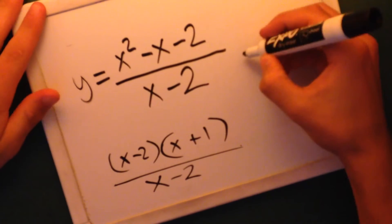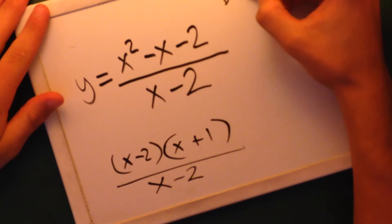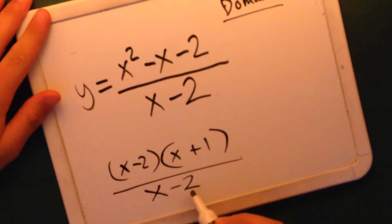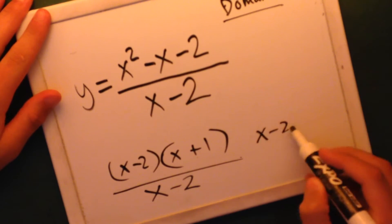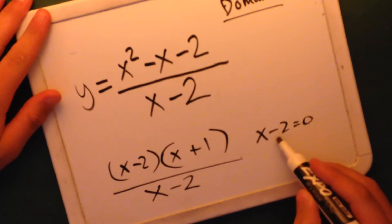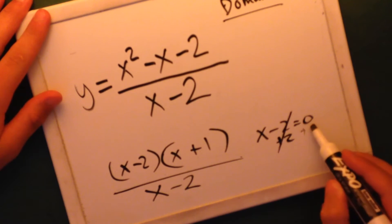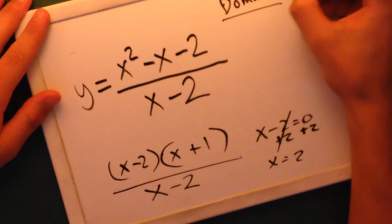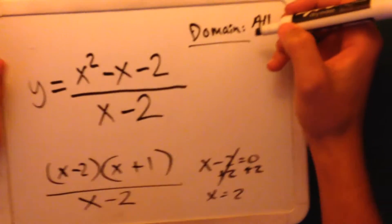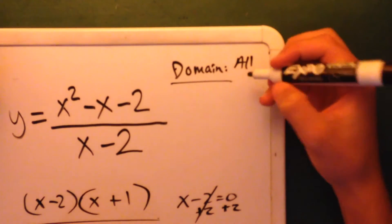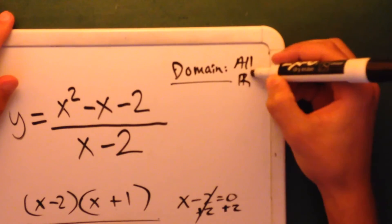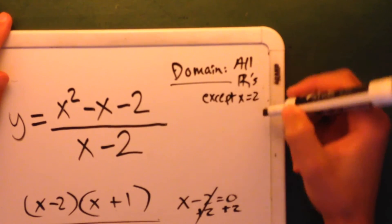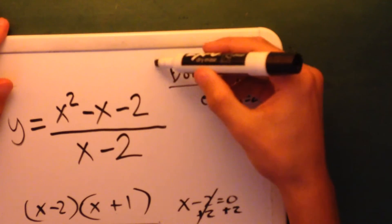Now we want to find the domain. The domain is found by setting the bottom equal to 0: x minus 2 equals 0, so x equals 2. The domain is all real numbers except x equals 2, so we can't have x equal to 2.